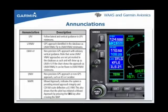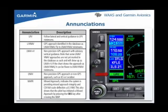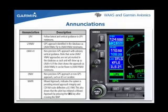The approach annunciations are shown in the lower left corner of the display. Appropriate annunciations are shown for each type of approach, such as LNAV, LNAV plus V, and LPV. Review the pilot's guide for all of the annunciations provided by the WAAS units.